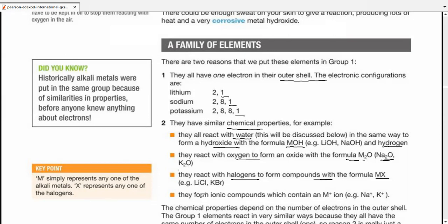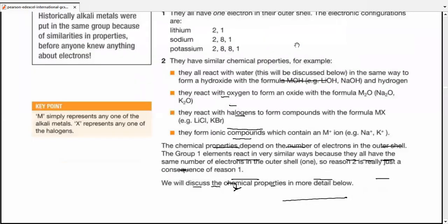They form ionic compounds which contain M+ ions. For example, Na+ or K+, both of these contain these ions. So this is the same example discussed, however, in terms of bonding. The chemical properties actually depend upon the number of electrons in the outer shell. The Group 1 elements react in very similar ways because they all have the same number of electrons in the outer shell: 1. So reason 2 is just really a consequence of reason 1.